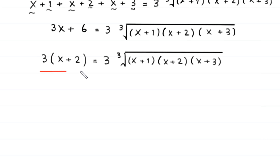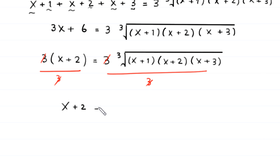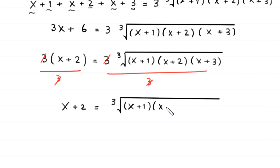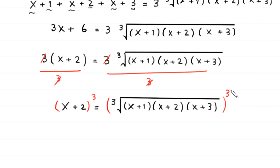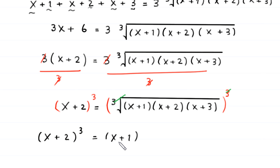Now we divide both sides by 3. The 3 cancels on both sides and we are left with x plus 2 is equal to cube root of (x plus 1)(x plus 2)(x plus 3). To remove the cube root, we take the cube of both sides. The cube root is cancelled, and we get x plus 2, whole cubed, is equal to (x plus 1)(x plus 2)(x plus 3).